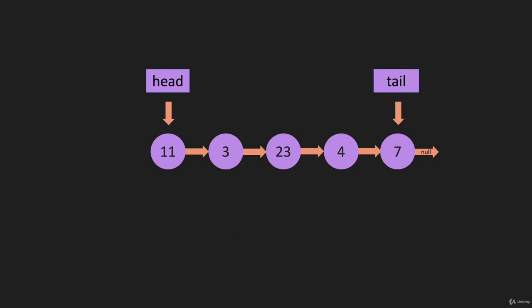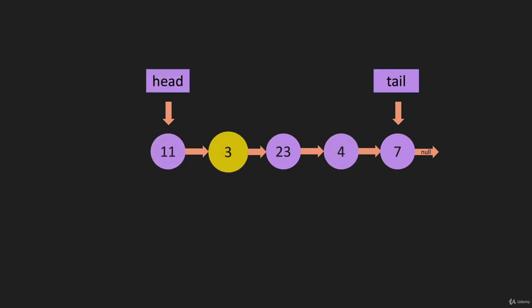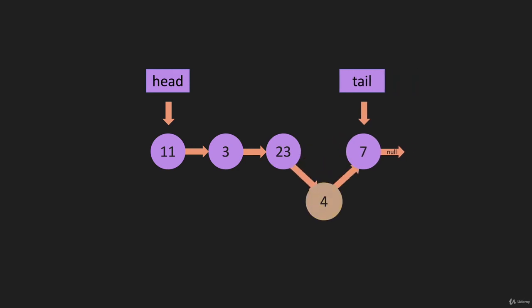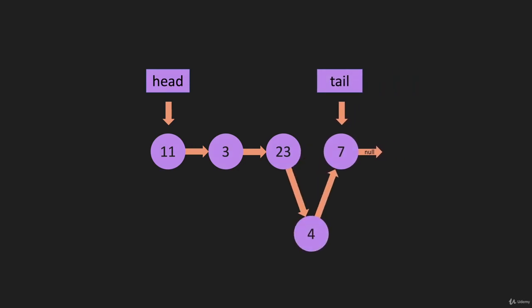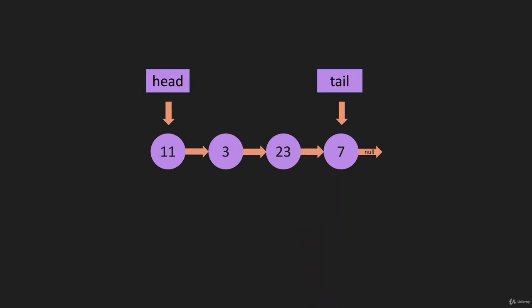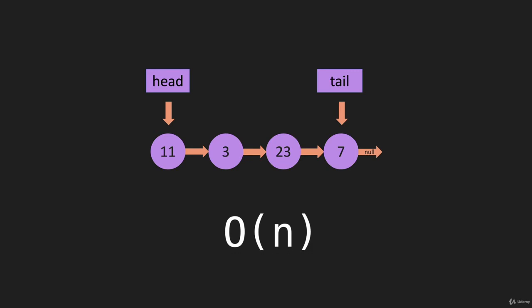Now let's see if we're going to remove that same item — removing the item at index three. We start at the head and go zero, one, two, three to get there. We want to have the 23 point to the same node that the four is pointing to, so we set the 23 pointer equal to the four pointer and drop the four out. That is O(n), because once again we had to iterate through.